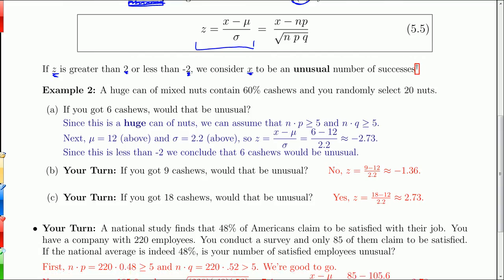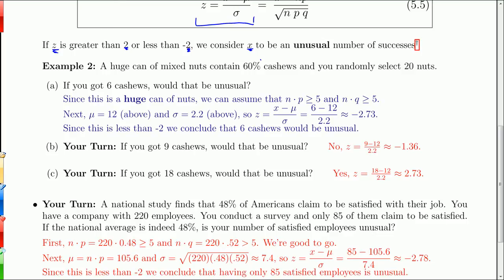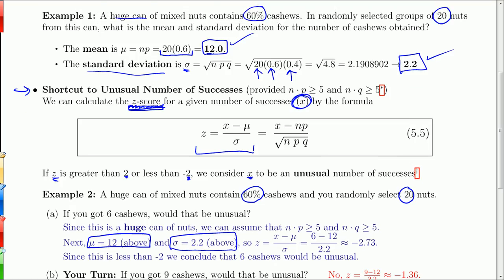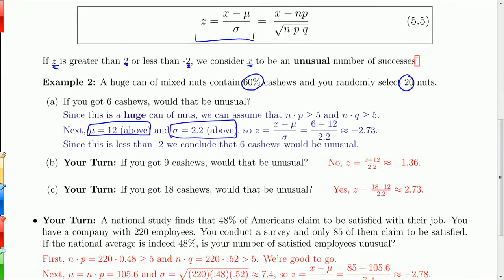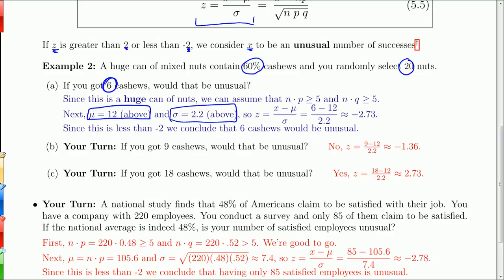So let's do our same problems, much quicker with this little rule. We have a huge can of nuts, 60% cashews. You randomly select 20. If you got 6 cashews, would that be unusual? Well, remember we did the mean and the standard deviation in the problem right up here. We got those right here: 12 and 2.2. So if you got 6, then we calculate the z-score of 6. That's just x minus mu over sigma, 6 minus the mean over sigma, negative 2.73. Alright, that is less than negative 2. So it's unusual. 6 cashews would certainly be considered unusual.